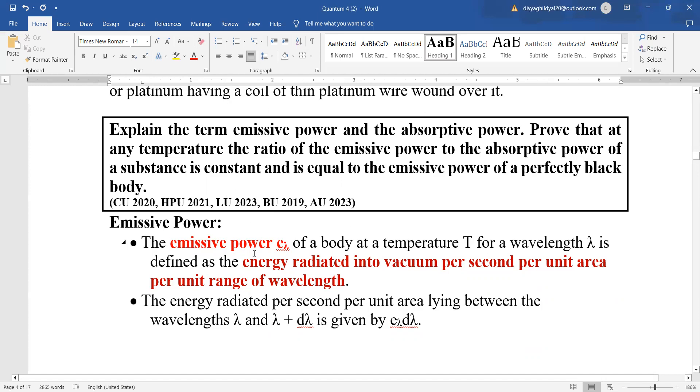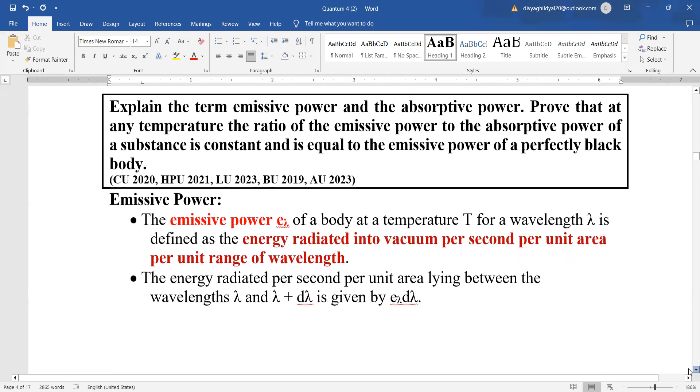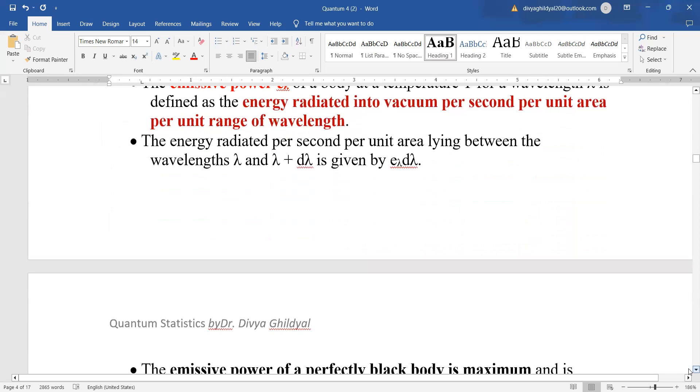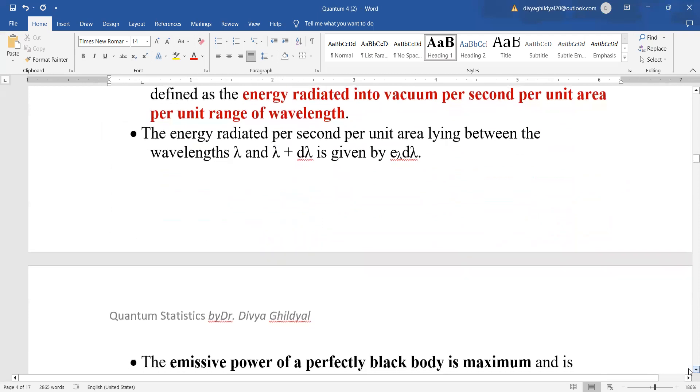Emissive power of a body at a specific temperature for specific wavelength is defined as the energy radiated into vacuum per second per unit area per unit range of wavelength. Suppose I take energy radiated per second per unit area between wavelengths λ and λ + dλ.